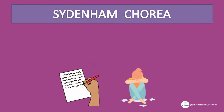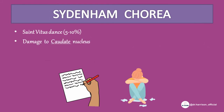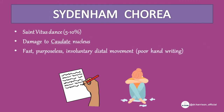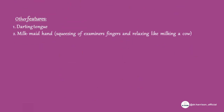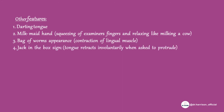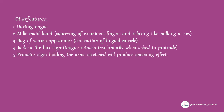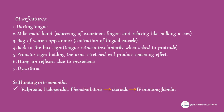Sydenham's chorea, also called Saint Vitus' dance, is due to damage of the caudate nucleus. It presents as fast, purposeless, involuntary distal movements. The first sign is emotional lability and difficulty walking, talking, and writing. Other features include: darting tongue; milkmaid hand — squeezing the examiner's fingers and relaxing like milking a cow; bag of worms appearance from contraction of lingual muscles; Jack-in-the-box sign — tongue retracts involuntarily when asked to protrude; and pronator sign — holding the arm stretched produces a spooning effect.